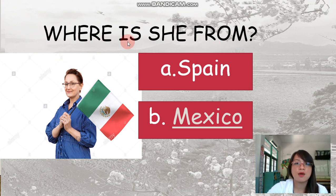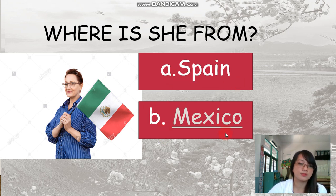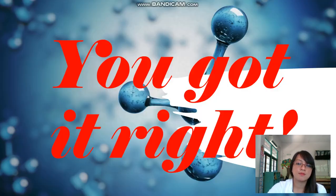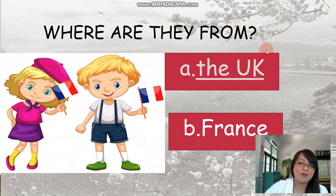Next: where is she from? A, Spain, or B, Mexico? My answer is letter B, Mexico. And I got it right again — very good!